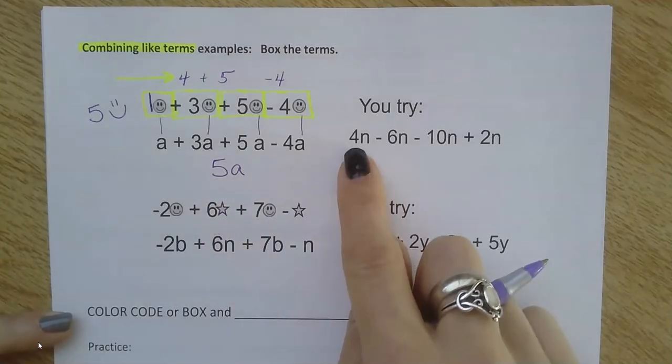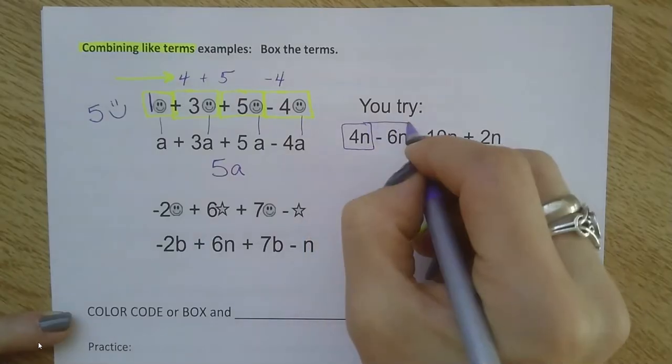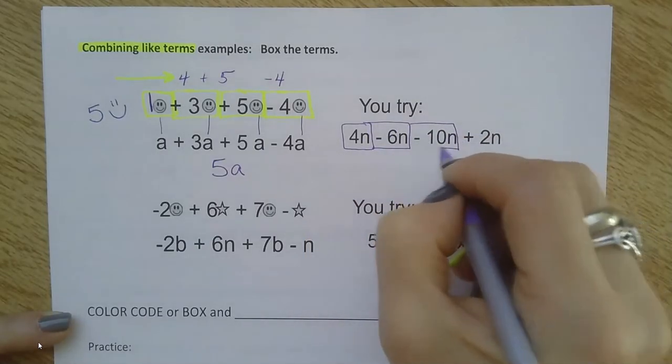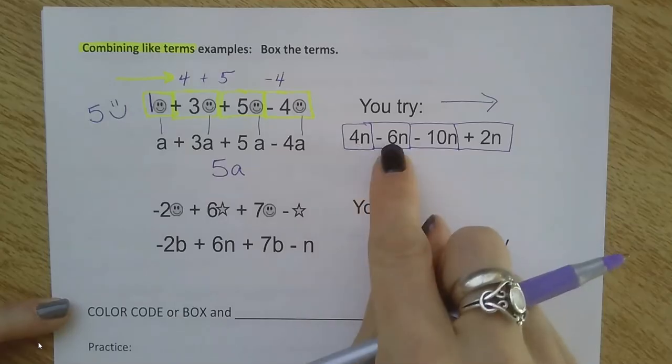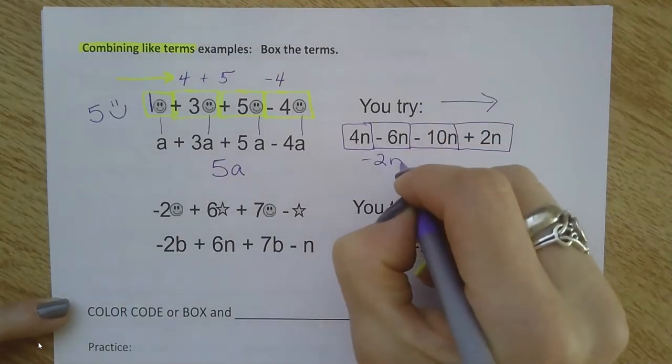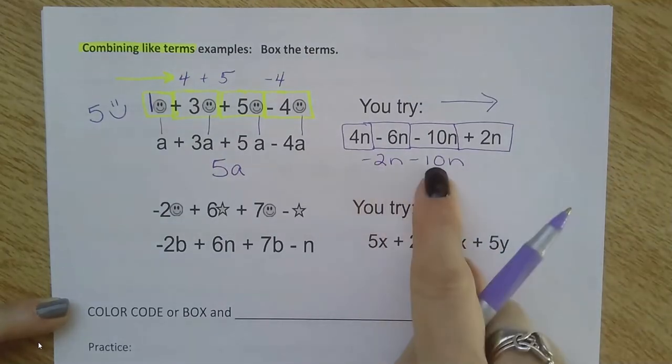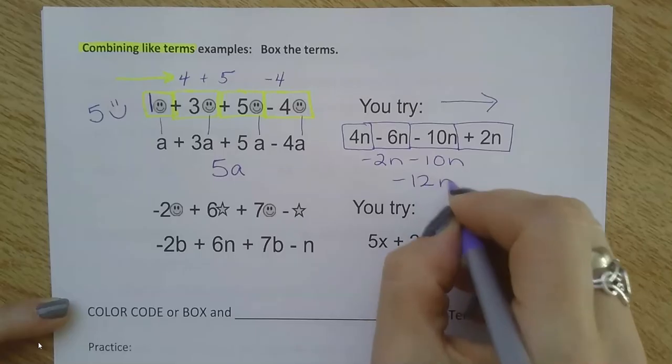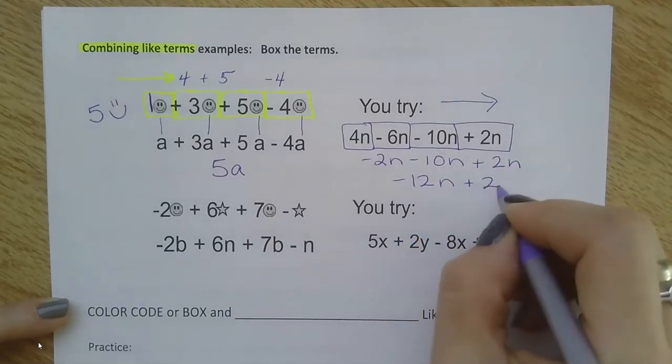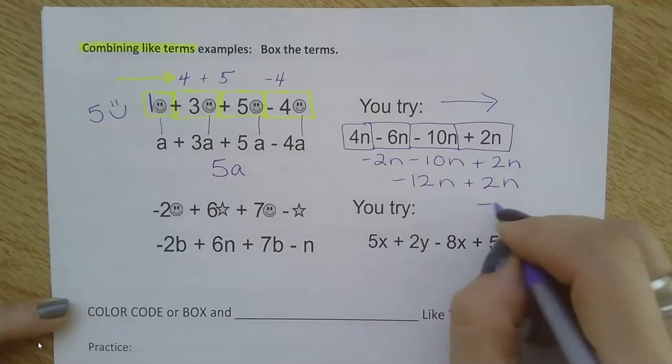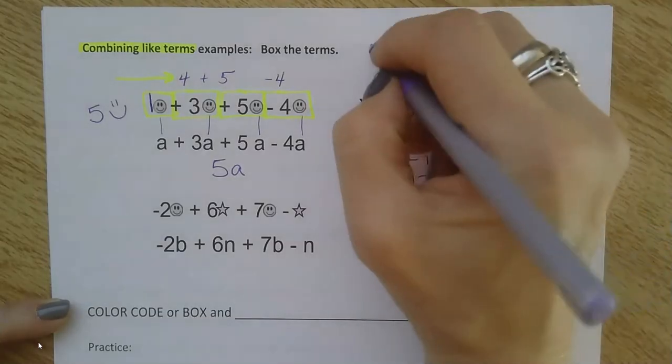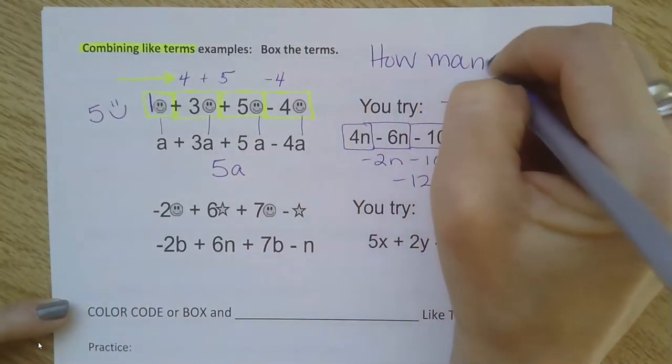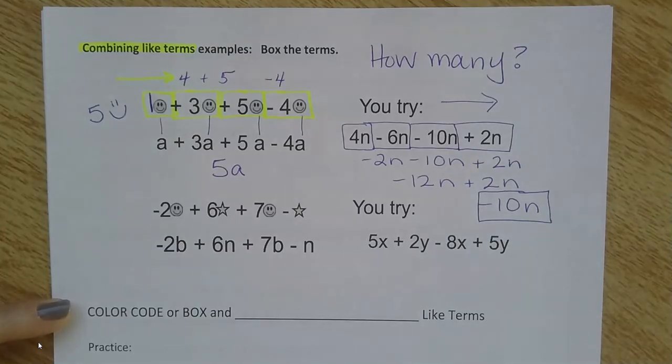Let's look at another example. My terms are 4n, negative 6n, negative 10n, and then 2n. You can use different strategies here. I like to just work left to right and combine those like terms as I go. So 4 and negative 6 make negative 2n minus 10 more n - negative 2 and negative 10 make negative 12n. Then I keep working my way across, plus 2n. Negative 12 plus 2 is negative 10n. Just think of the variable as things you're counting up - how many do you have total?